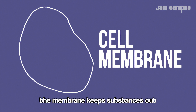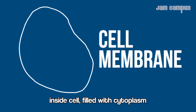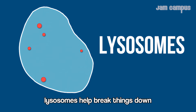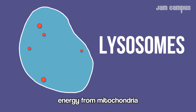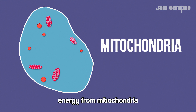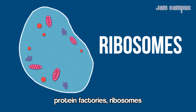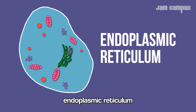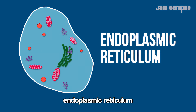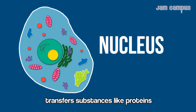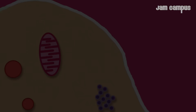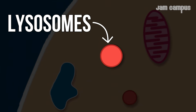The membrane keeps substances in and out. The cell is filled with cytoplasm. Lysosomes help break things down. Energy comes from mitochondria. Protein factories are ribosomes. The endoplasmic reticulum transfers substances like proteins. The nucleus controls the cell. Mitochondria, lysosomes.